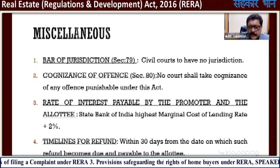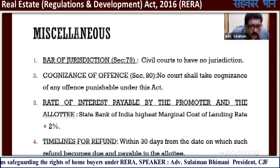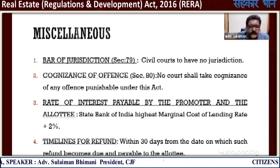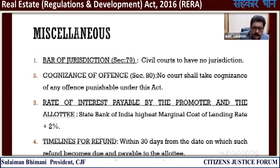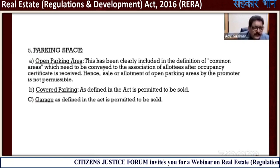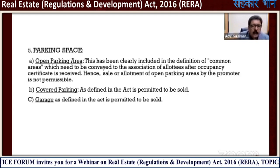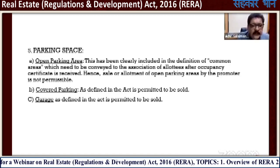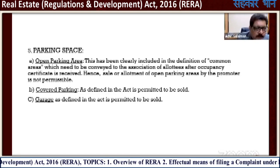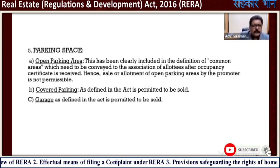Timeline for refund: within 60 days from the date on which such refund becomes due and payable to the allottee. If you get a refund order, the builder has to refund the money within 30 days. Parking space — open parking area has been clearly included in the definition of common areas which need to be conveyed to the association of allottees. Hence, the sale or allotment of open parking areas by the promoter is not permissible as per RERA. Covered parking and garage as defined in the act are permitted to be sold.